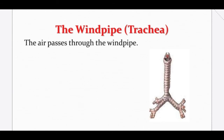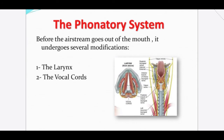The trachea, sometimes called the windpipe, is the second organ of the respiratory stage. Its function is that it is a kind of tube that links the lungs to the larynx. The transportation of the airstream takes place here — air travels in and out through this pipe. The sound energy produced in the lungs travels all the way up to the larynx through the trachea.